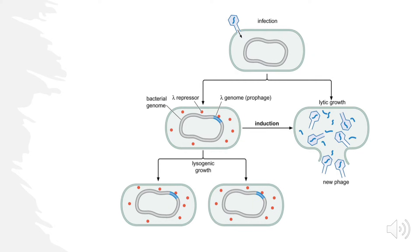Lysogenic growth is a little different. This is where the host genome is integrated with the phage genome, which is known as the prophage. There are little red dots called lambda repressors, which we will get into in a second. That's the general overview of what's going on.